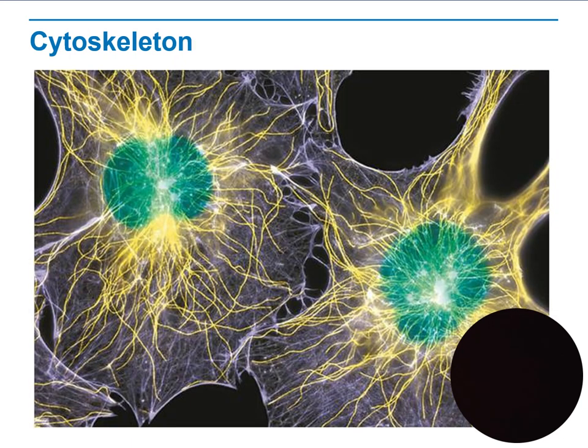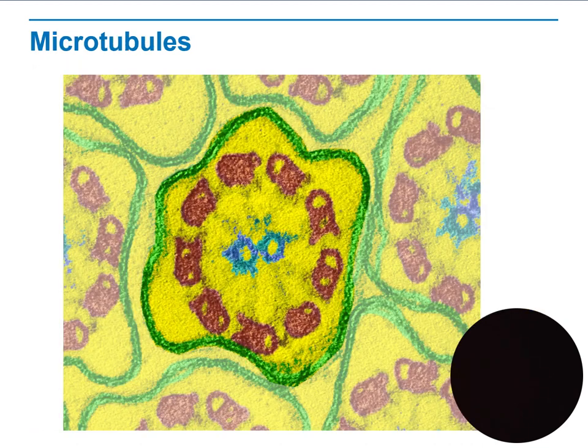Also, if you look at the figure, you can see that we have an extensive network of filaments in the cytoplasm called the cytoskeleton. Microtubules are hollow structures made of a protein known as tubulin. These are found in many cells and play a critical role in maintaining cell shape.